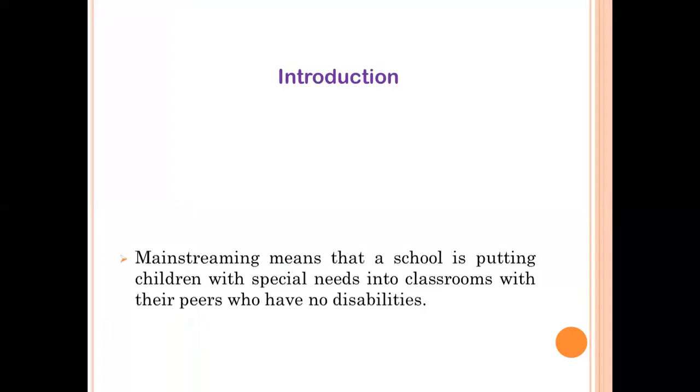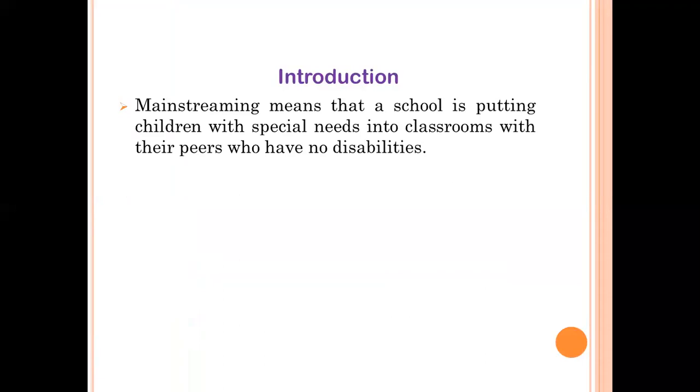Remember that the three terms have completely different meanings — they are definitely different from each other. Mainstreaming simply means that a school is putting children with special needs into classrooms with their peers who have no disabilities. In mainstreaming, we combine regular education classes with special education classes.